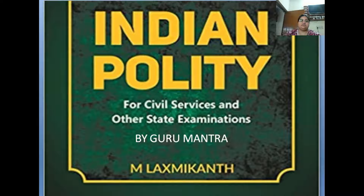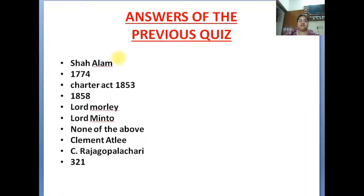You will see the answers in this chapter. The first answer is Shah Alam. Second answer is 1774. Third is Charter Act of 1853. Fourth is 1858. Fifth is Lord Morley. Sixth is Lord Minto. Seventh is none of the above. Eighth is Clement Attlee. Ninth is Siraj Gopal Chari. And tenth is 321.